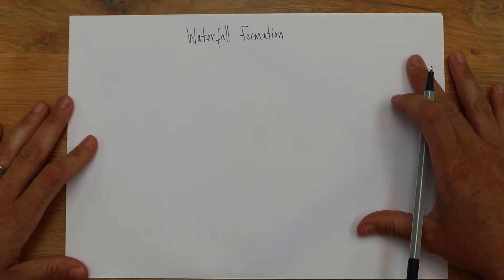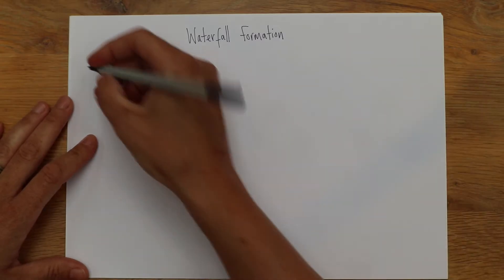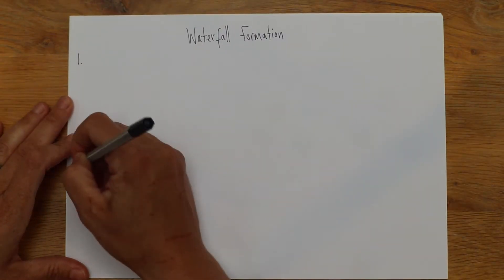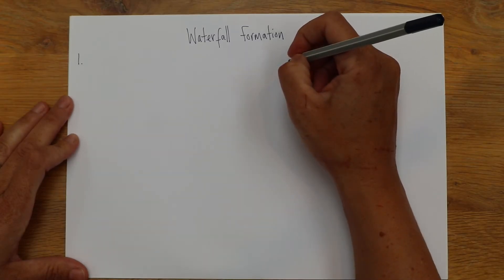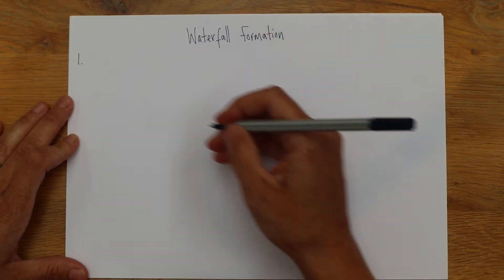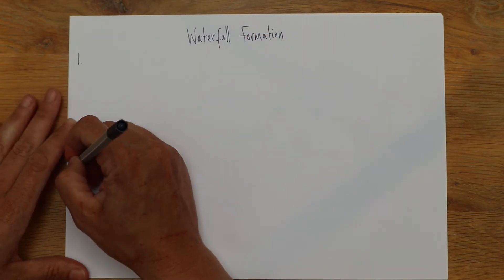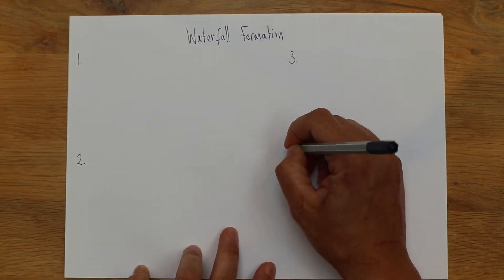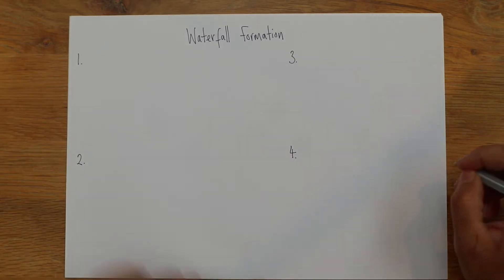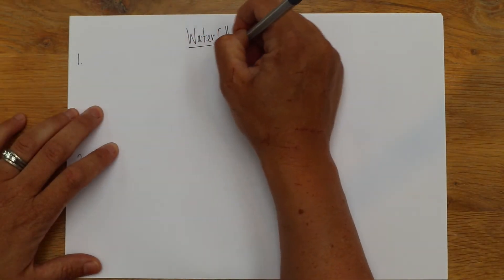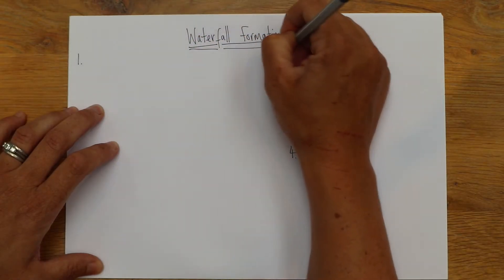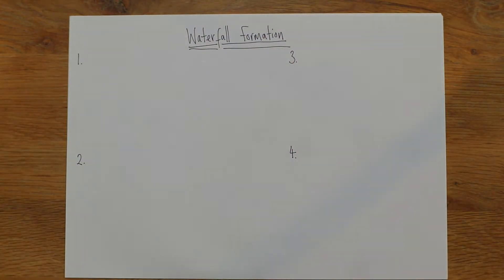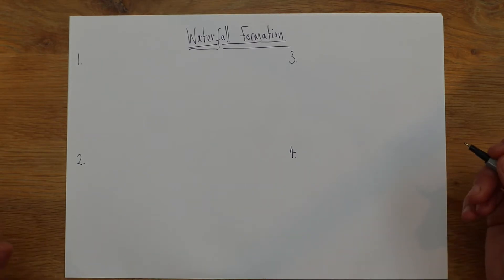So this might be something that you've perhaps struggled with in the past. I'm gonna make it really easy today. I'm gonna start with the first stage. There's four stages in total, so if you put one, two, three, and four on your page. Now it's helpful but not essential if you've got any colors today, and two colors really just to point out the difference in the rock types would be ideal.